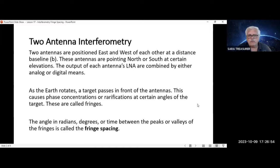As the earth rotates, a target passes in front of the antennas. This is drift scanning. This causes phase concentrations or rarefactions at certain angles of the target. These are called fringes. The angle in radians, degrees, or time between the peaks or valleys of the fringes is called the fringe spacing.